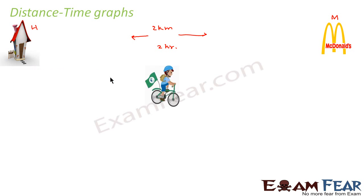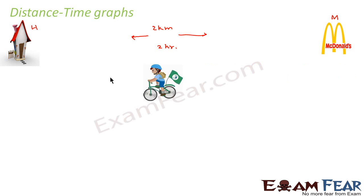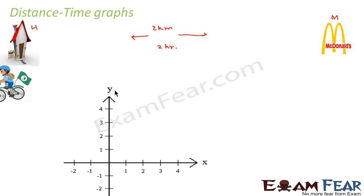Ronnie goes from home to McDonald's and again comes back from McDonald's to home. In this scenario we have to plot the distance-time graph. To plot a distance-time graph, we consider the x-axis to be the time, so time is taken along this axis and distance is taken along the y-axis.